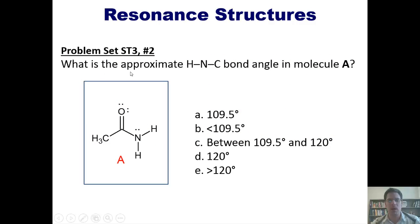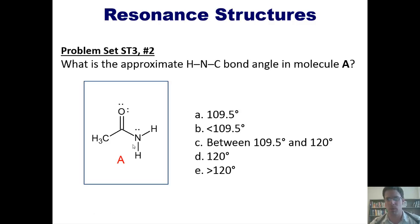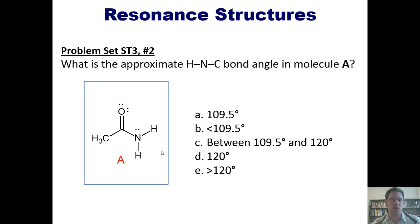What is the approximate hydrogen-nitrogen-carbon bond angle in molecule A? If this were an isolated non-resonating nitrogen atom with four things around it, its bond angle would be somewhere around a little less than 109.5 degrees — tetrahedral geometry. However, this nitrogen can resonance-delocalize its electrons to form a nitrogen-carbon double bond. When those electrons are pushed down, that nitrogen now has three things around it and therefore has a trigonal planar geometry with a bond angle of 120 degrees. So the bond angle is going to be somewhere in between the two — the correct answer is option C.